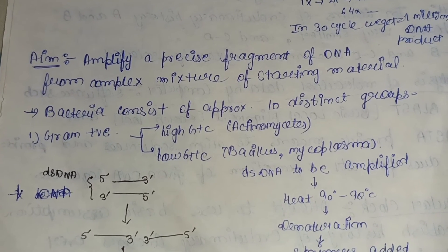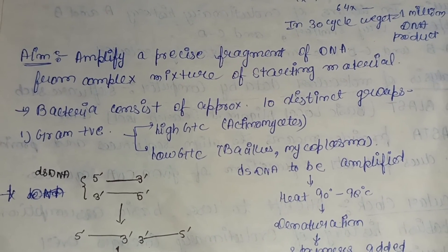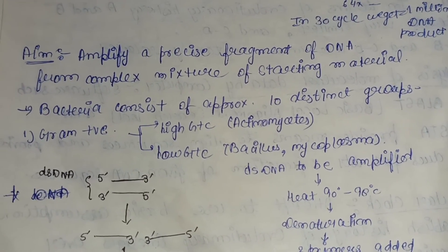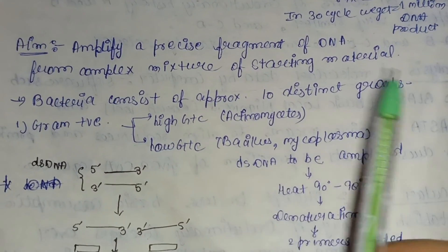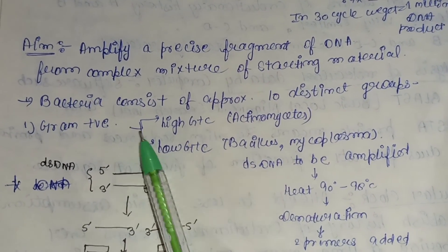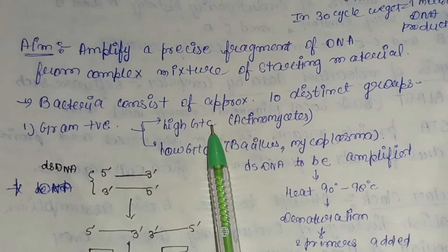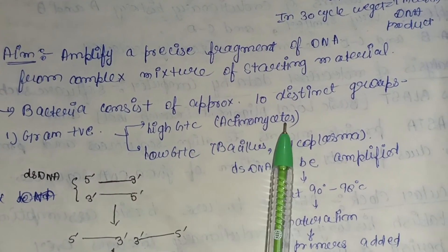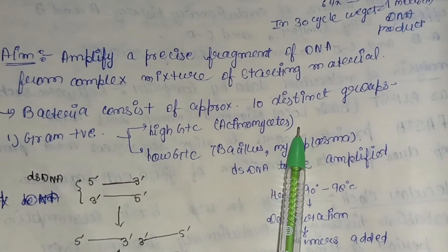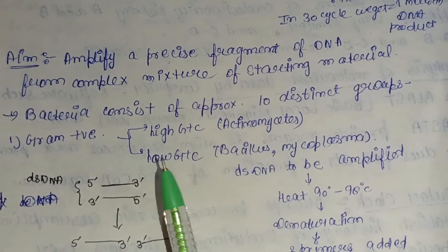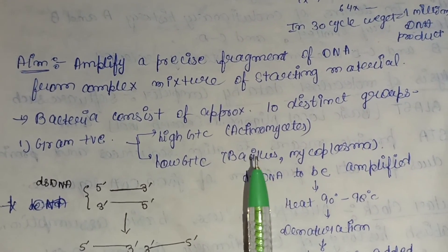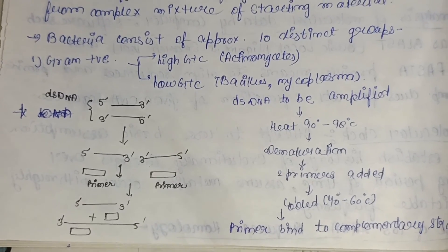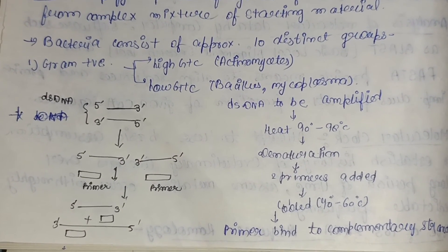The aim of the PCR cycle is to amplify a precise fragment of DNA from a complex mixture of starting material. In the case of bacteria, they consist of approximately two distinct groups: gram-positive bacteria with high G+C content — that is, guanine plus cytosine — such as Actinomycetes, Mycobacteria, and Micrococcus; and those with low G+C content such as Bacillus and Mycoplasma.